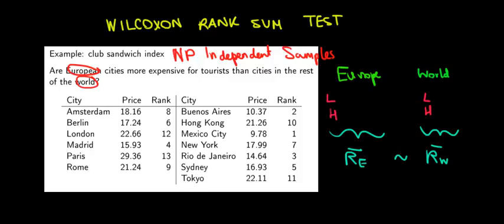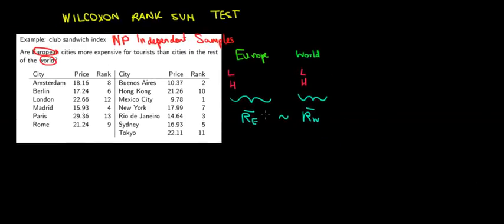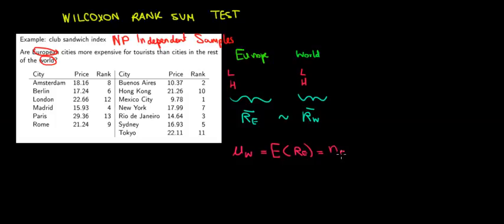Similar to the signed rank test, we're not comparing the rank in Europe directly with the rank of the rest of the world. Instead, we compare the average rank in Europe with the expected value — the value of the entire population if we take the prices from all European cities and the world together. The mean of the Wilcoxon rank sum is the expected value of the ranks in Europe. Basically, the average rank sum would be n — the number of observations in Europe — times the overall average rank.